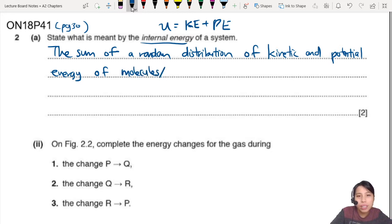So let's write that down. Sum of kinetic and potential energy. But you must mention of a particle. So of all the particles and molecules in the system. I know the question says of a system, but you want to say of molecules and particles inside the system. You want to be more specific because sometimes they are very picky about molecules and particles.